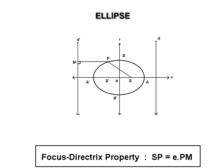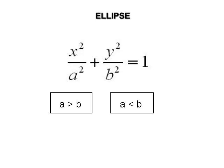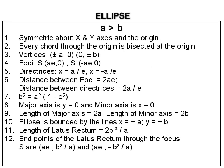We now discuss the ellipse x² upon a² plus y² upon b² equal to 1. There are two cases: a greater than b, and a less than b. First, we consider a greater than b. For this ellipse there are two axes of symmetry: the x-axis and y-axis. As this ellipse is symmetric about both axes, it is symmetric about the origin also. Every chord of this ellipse through the origin is bisected at the origin, and therefore the origin is the centre of this ellipse. That is, the ellipse is a central conic.